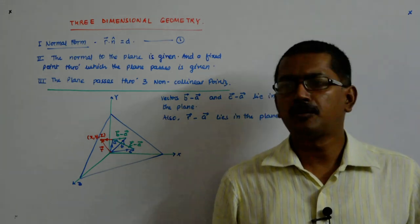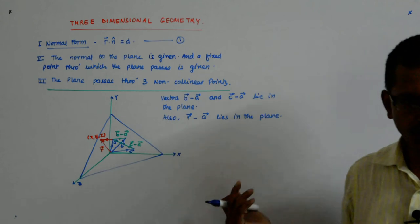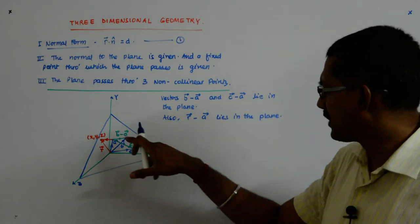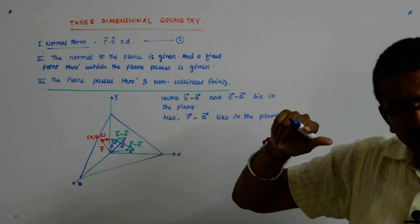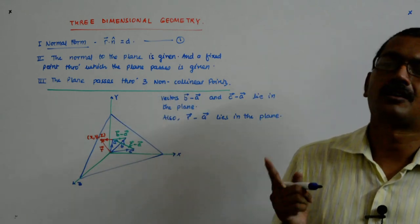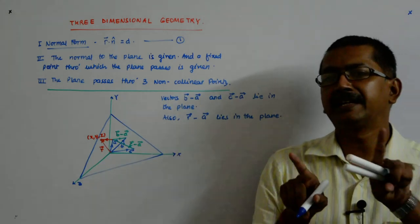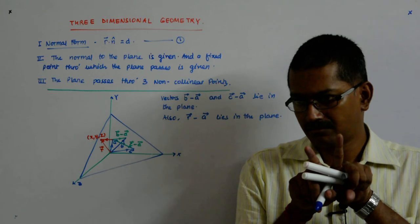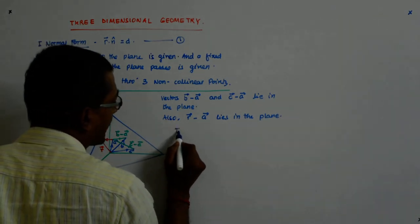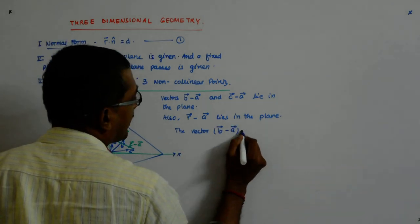What we have been doing so far is: when given a normal vector, we find a vector perpendicular to it and apply the dot product equal to zero. Here, all vectors I'm getting lie in the plane. But I have two vectors in the plane, and to get a vector perpendicular to both of them, I need to take the cross product — because the cross product yields a vector perpendicular to the plane containing both vectors.